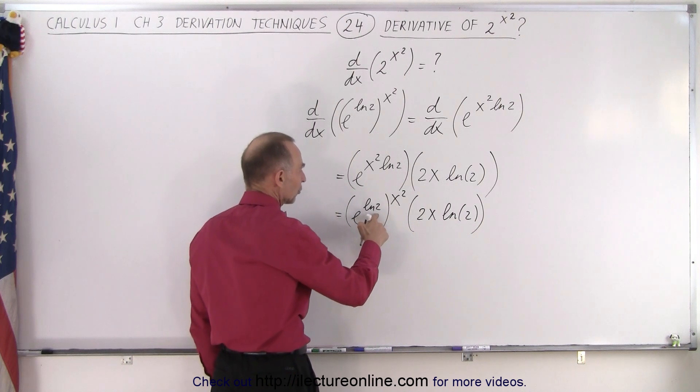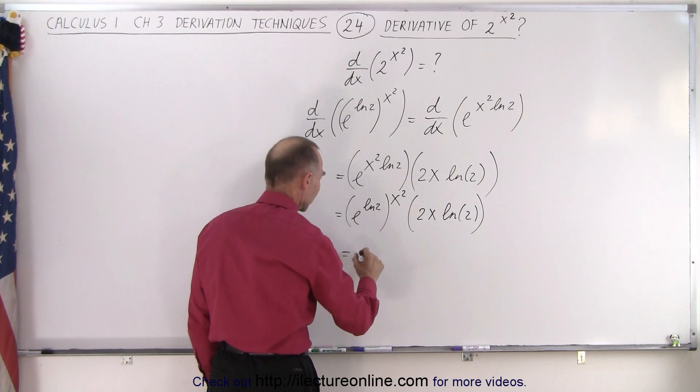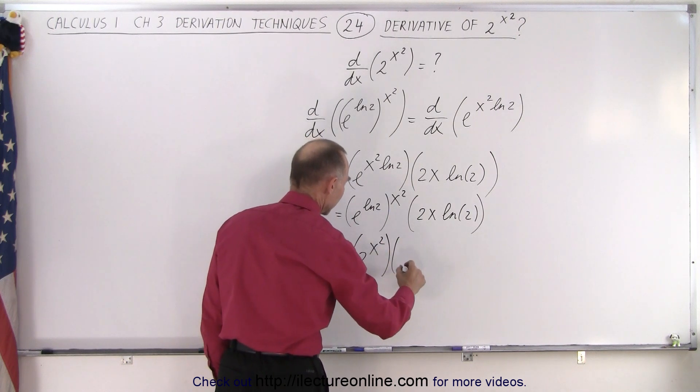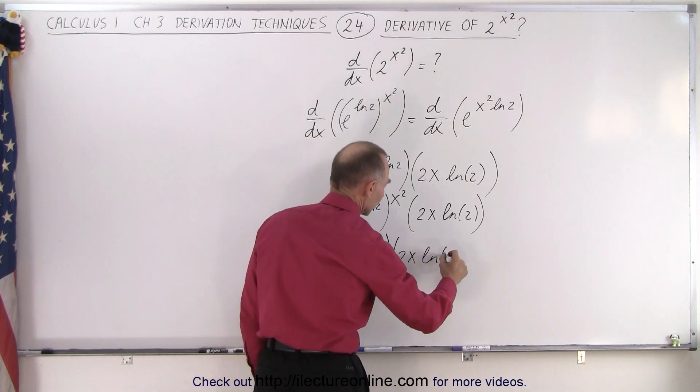Of course, e to the natural log of 2 simply becomes 2 again, so this becomes 2 to the x squared, multiplied by 2x times the natural log of 2.